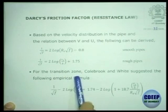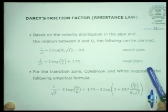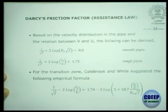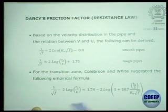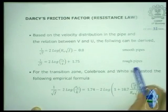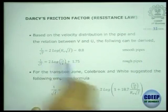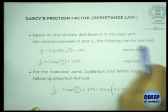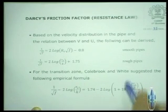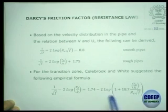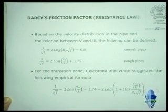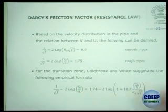In the transition zone, when flow changes from smooth to rough turbulent, there is an empirical relationship proposed by Colebrook and White, which is very popular. It is so framed that at very high Reynolds number where the pipe behaves like a rough pipe, you get the rough pipe relationship. When the role of relative roughness height is negligible, the same equation reduces to the smooth pipe equation. In summary, Colebrook-White's equation connects the two limiting cases.